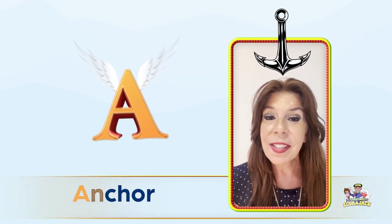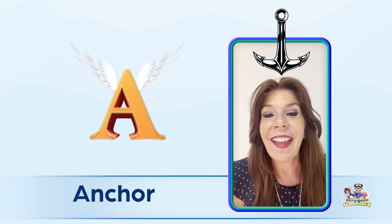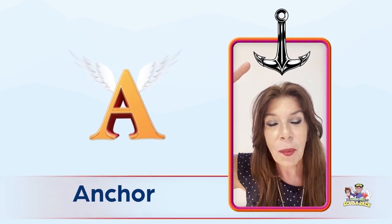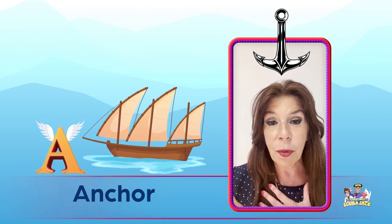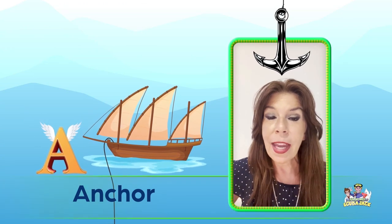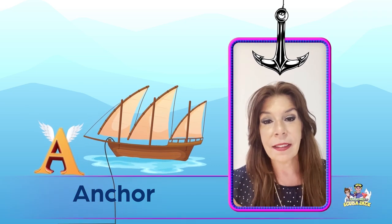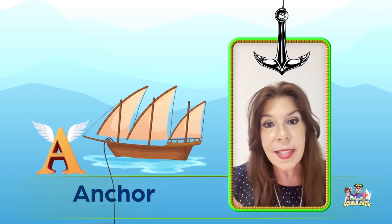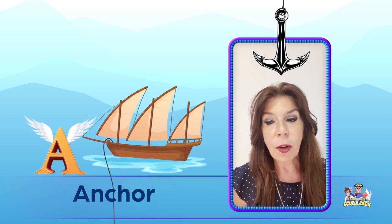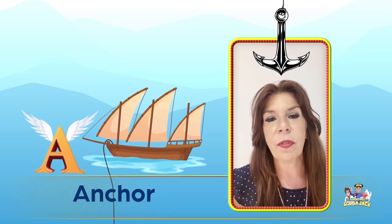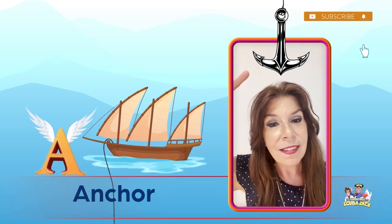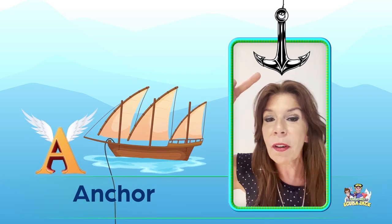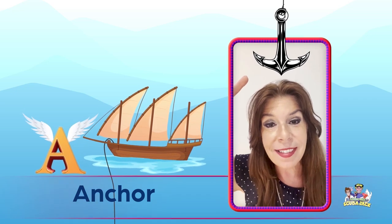Hey kids, our last word is anchor. Can you say anchor? Let's say it one more time — anchor. Here's a picture of an anchor. What color is the anchor? It's black! Do you know what an anchor is? I have a boat, and the anchor is connected to the boat. You throw the anchor into the water and it's connected to the boat with a line. It keeps the boat in place so that if it's windy or the waves are big, the anchor holds the boat so you don't move. Anchor begins with the letter A!